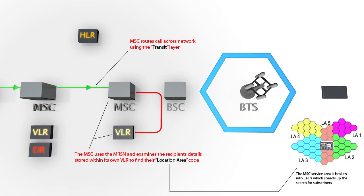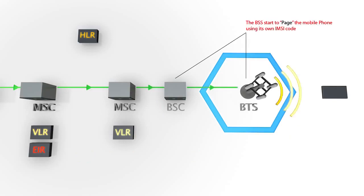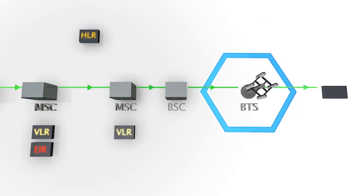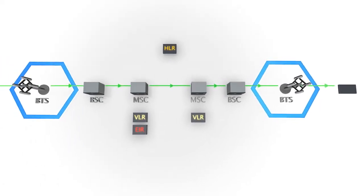After the call has been successfully routed across the network using the supplied MSRN, the serving MSC examines its own VLR to find the recipient's location area code. Once this information has been found, the MSC then broadcasts the recipient's IMSI to all the base stations within that geographical area.